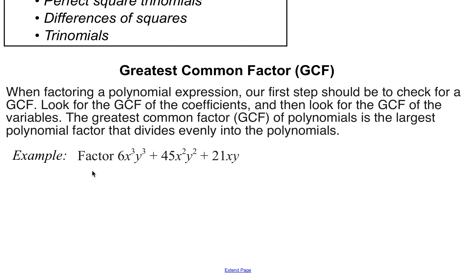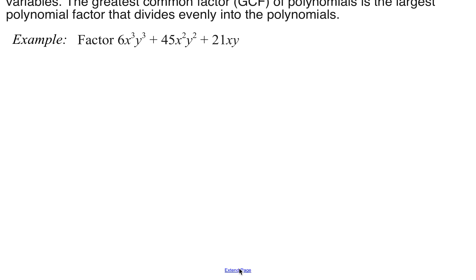So let's go ahead and get started with our first example. This one says to factor this trinomial by looking for a greatest common factor first. Do 6, 45, and 21 have a common factor that they share? And the answer to that question is yes.